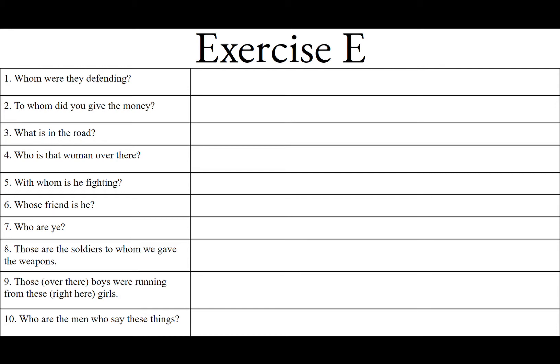They were defending. We know this because — go to your verb: defending. Who's doing the defending? They are defending. They were doing the defending, so 'they' is the subject. 'They' is going to be the nominative. Whom were they defending? Well, they're defending someone — whom? They're defending them. So 'whom' is the direct object, the accusative.